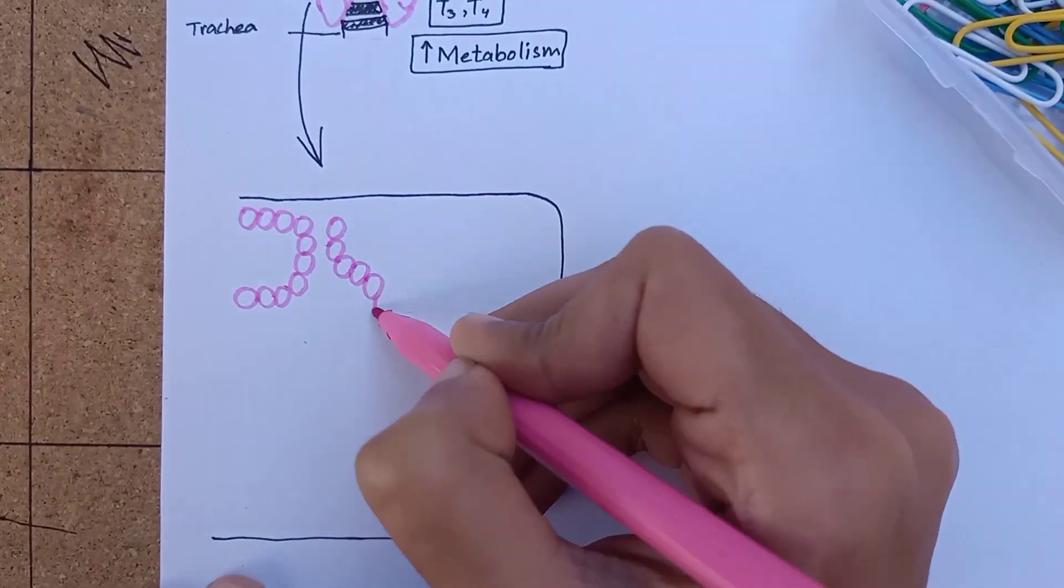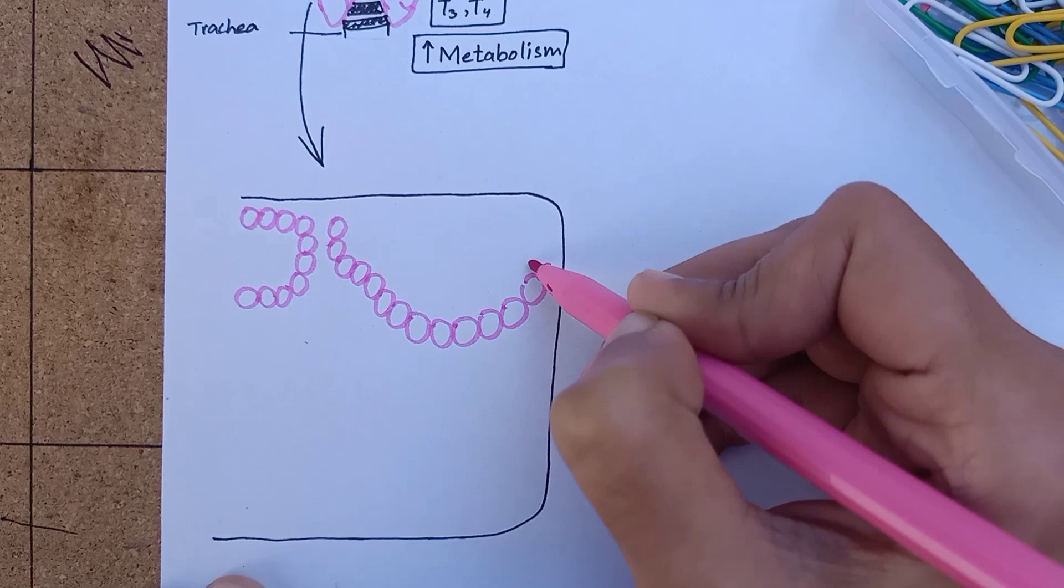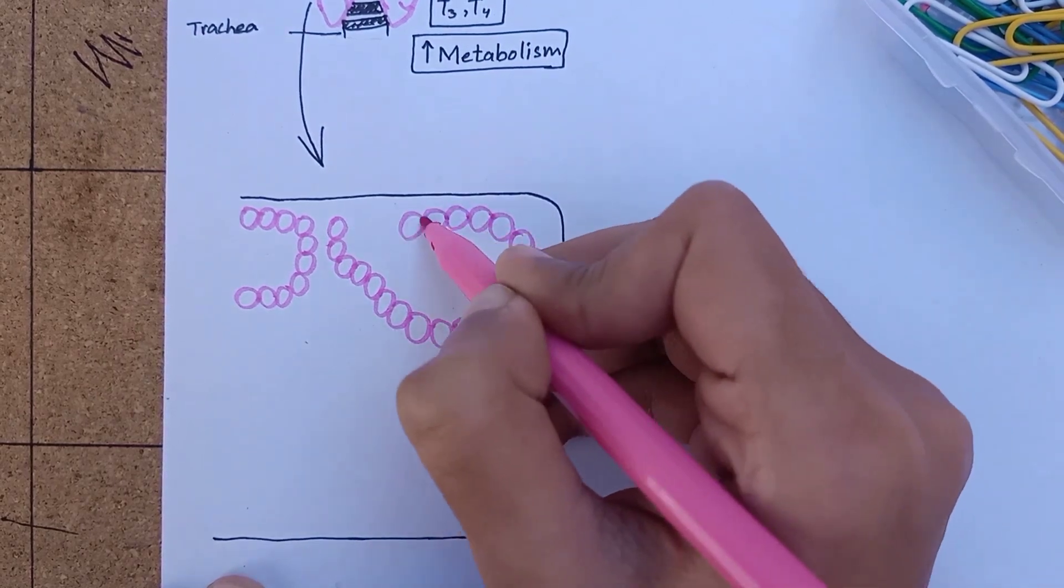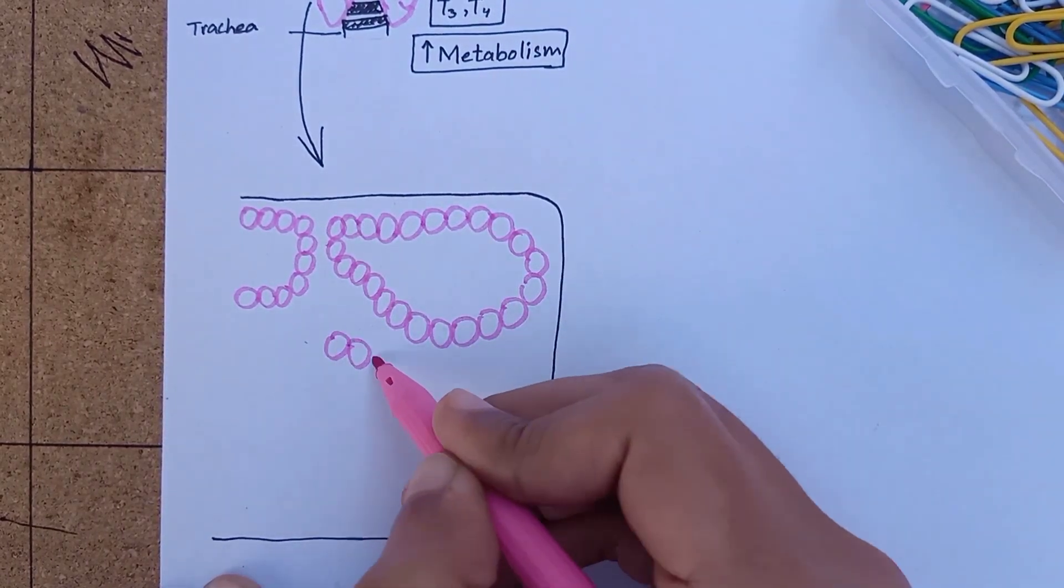The thyroid gland is composed of large numbers of closely packed follicles. These follicles are lined by cuboidal epithelial cells.